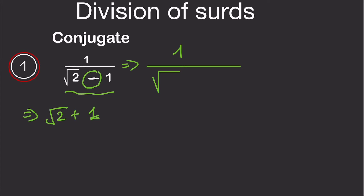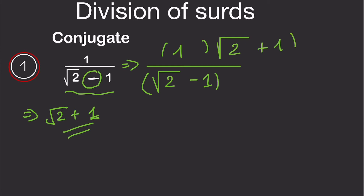Our question is 1 over root 2 minus 1. We need to multiply both the numerator and the denominator by the conjugate, which is root 2 plus 1.